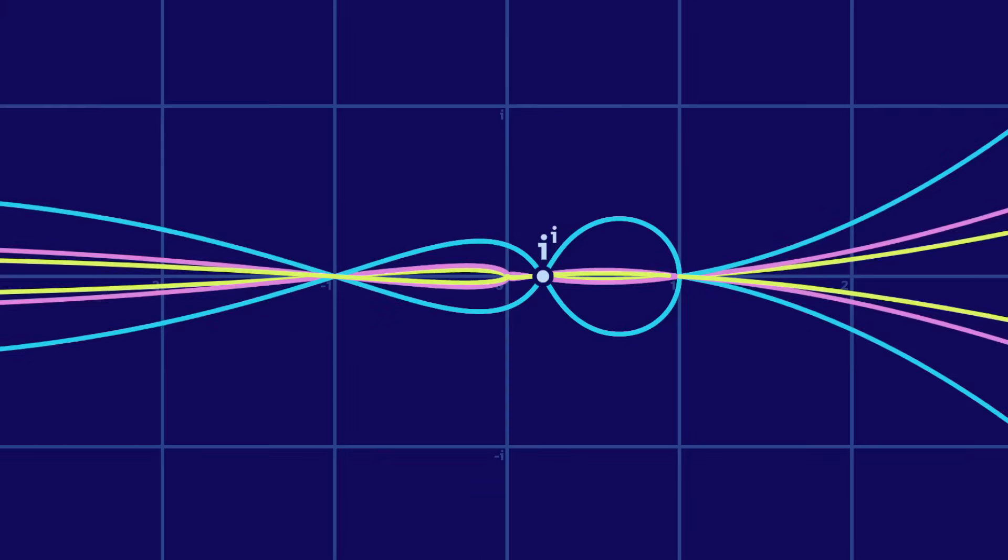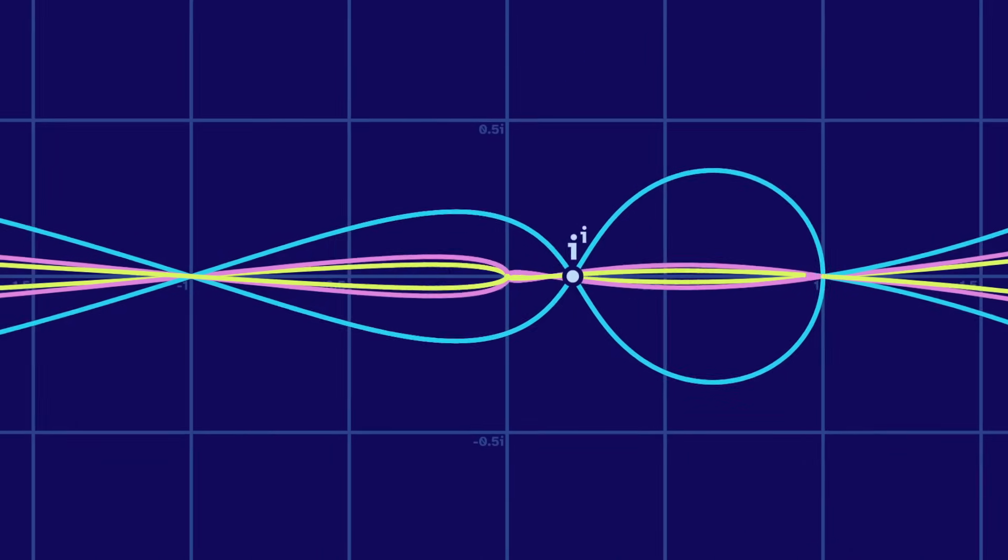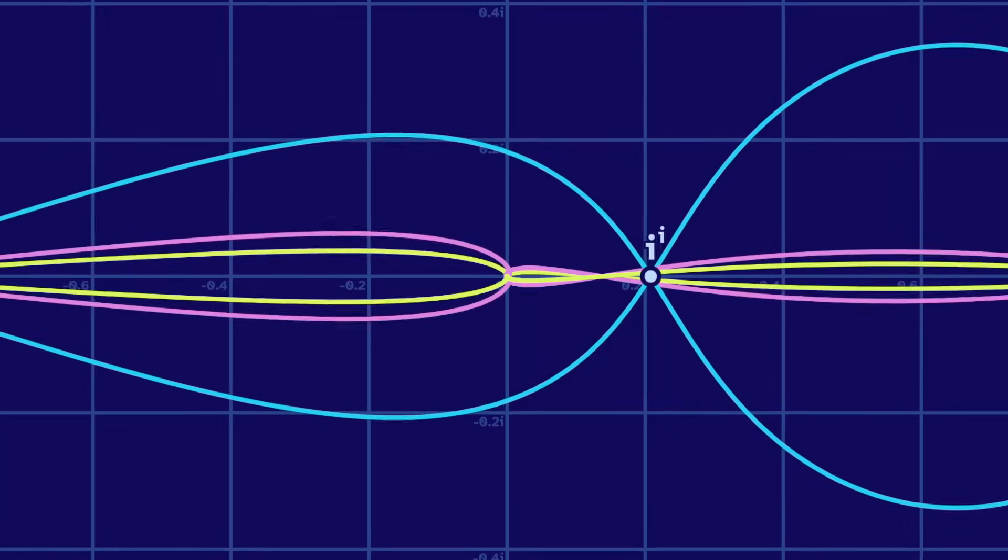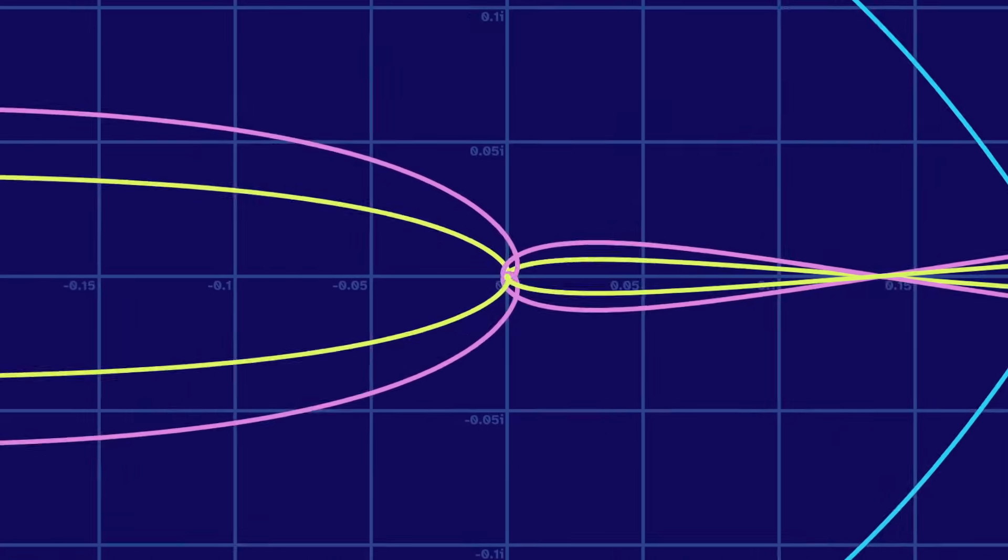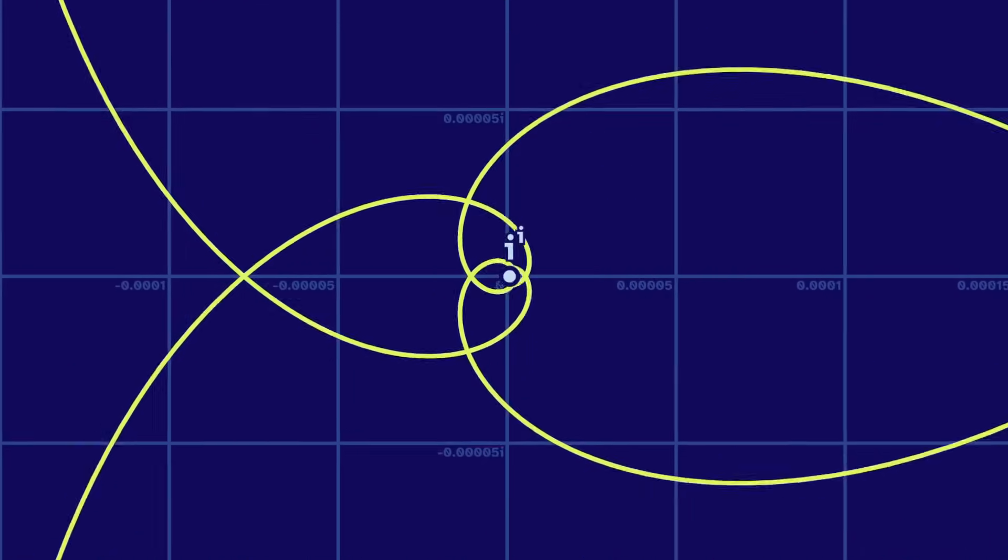And going back to the graph, we see that these outputs of i are near the extremes. This output is about as close as the blue lap gets to 0, and then again with the pink lap, and again with the yellow. Interesting.